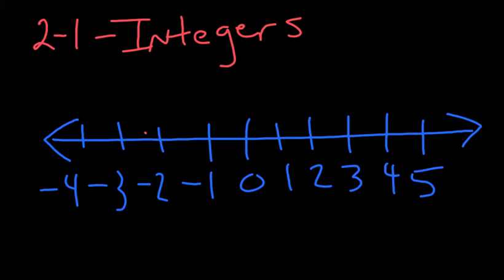Let's try another one. What if it says graph 2 and its opposite on a number line? 2 is here. What's 2's opposite? Negative 2. So you just graphed 2 and negative 2. They're opposites on a number line. Those are the first kind of problems you're going to see on homework tomorrow.